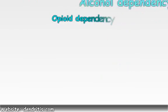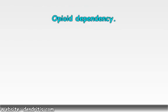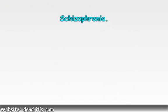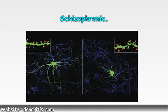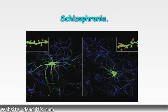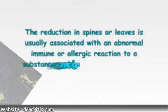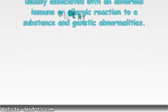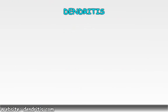These are photographs showing the reduction in spines or leaves in opioid dependency. These are photographs showing the reduction in spines or leaves in schizophrenia. The reduction in spines or leaves is usually associated with an abnormal immune or allergic reaction to a substance and genetic abnormalities. This means that inflammation causes the change in spines. The new term 'dendritis' describes this inflammation of the dendrites and their dendritic spines.